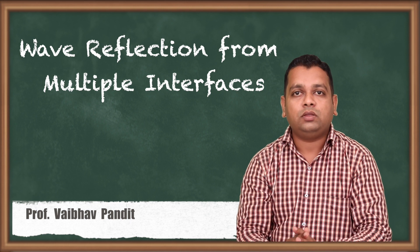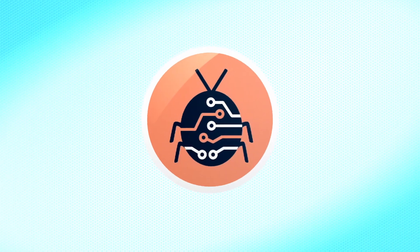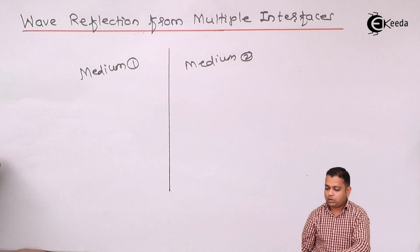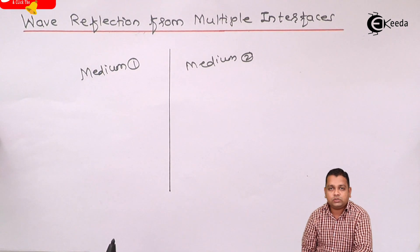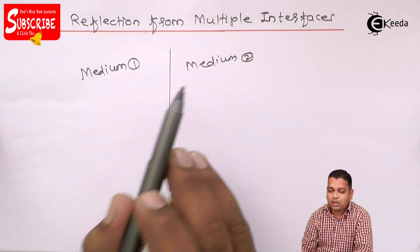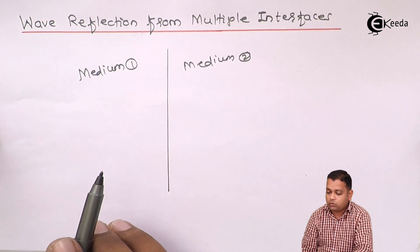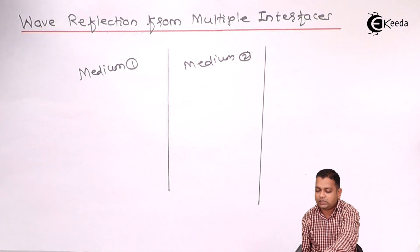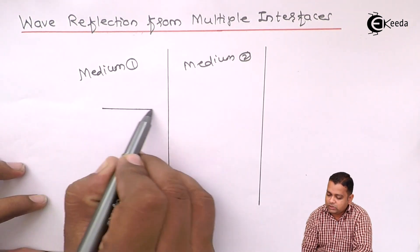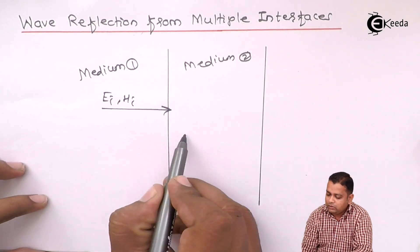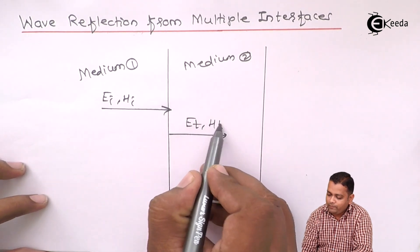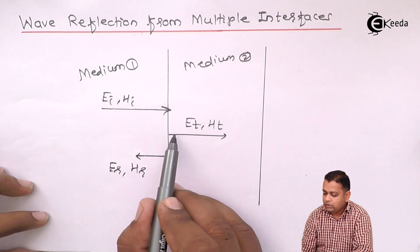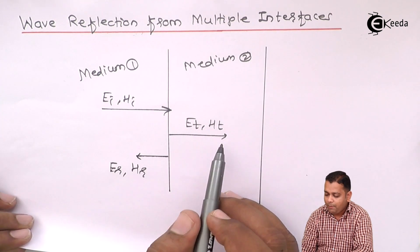So let us take the new topic: wave reflection from multiple interfaces. Up till now, whatever reflection of electromagnetic wave we have seen was for interface 1 only, separating two regions — medium 1 and medium 2. In the previous video where we solved problem number 2 to calculate the standing wave ratio, we had taken another interface, but the assumption there was that there is no reflection from that particular interface. We simply considered the incident wave as E_I H_I, the transmitted wave as E_T H_T, and the reflected wave as E_R H_R.